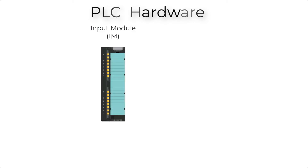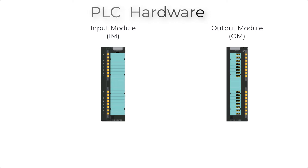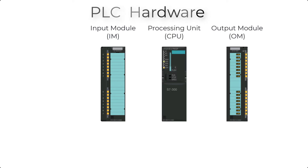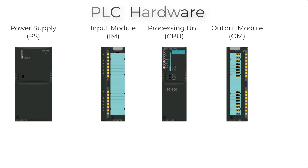PLC hardware consists of four major parts: 1. Input Module, 2. Output Module, 3. CPU and Memory, 4. Power Supply. Input and Output modules are optically isolated from the CPU.